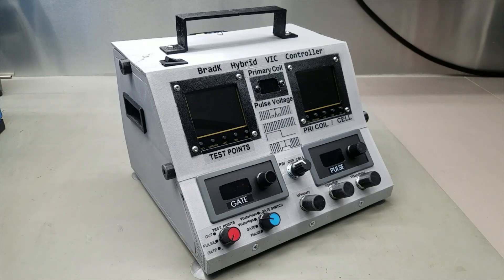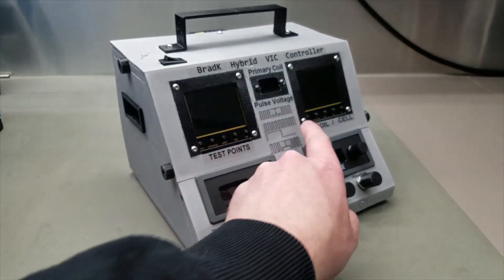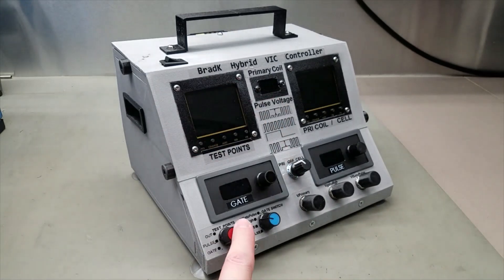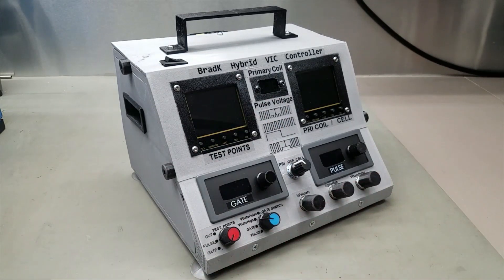The whole purpose of this is to replace all the individual components and instruments I had before to drive the VIC coil and condense them down into one unit and make it more portable. So here you can see I've got two oscilloscopes, two frequency generators, a voltmeter, and I've got several switches and potentiometers.